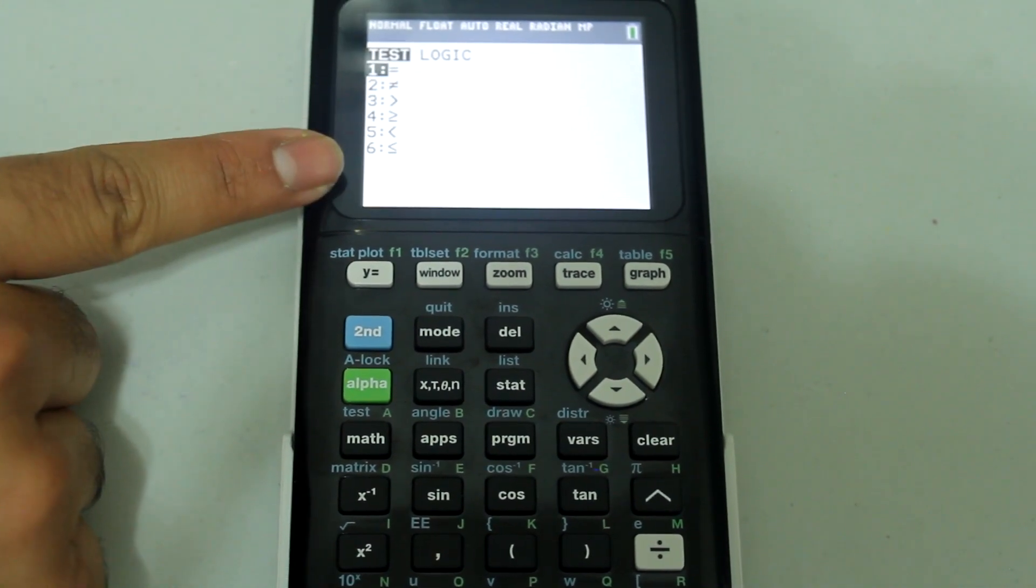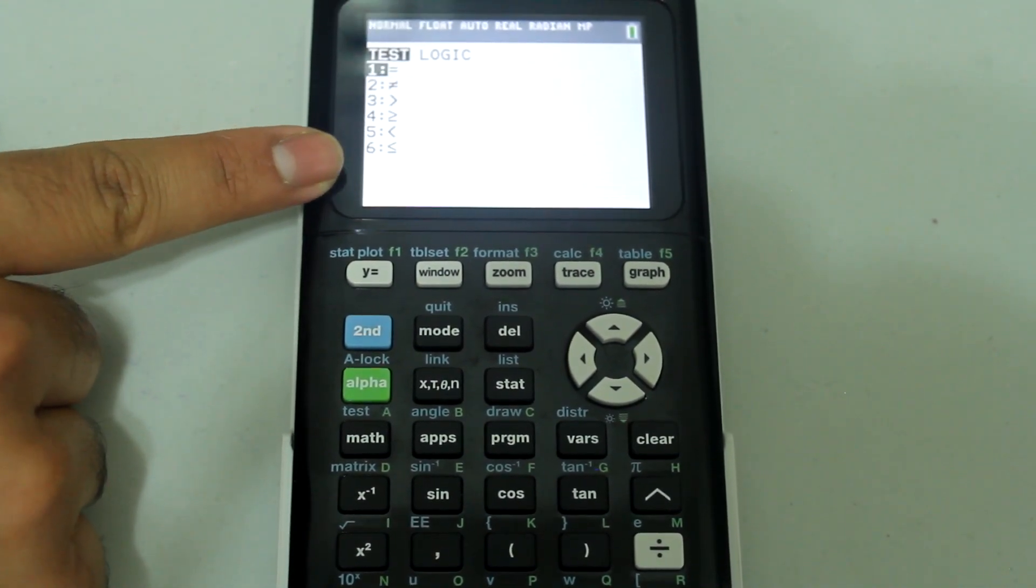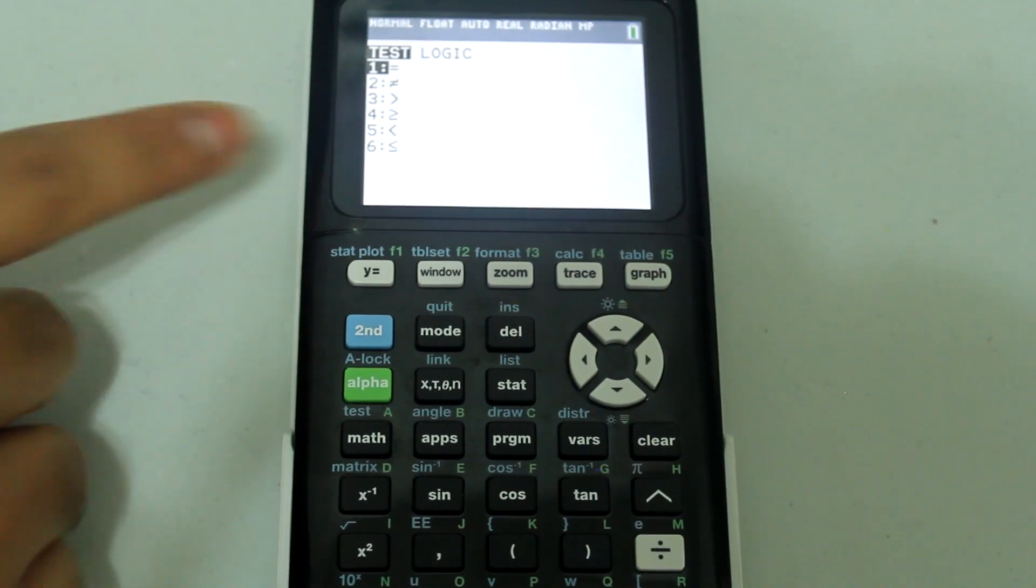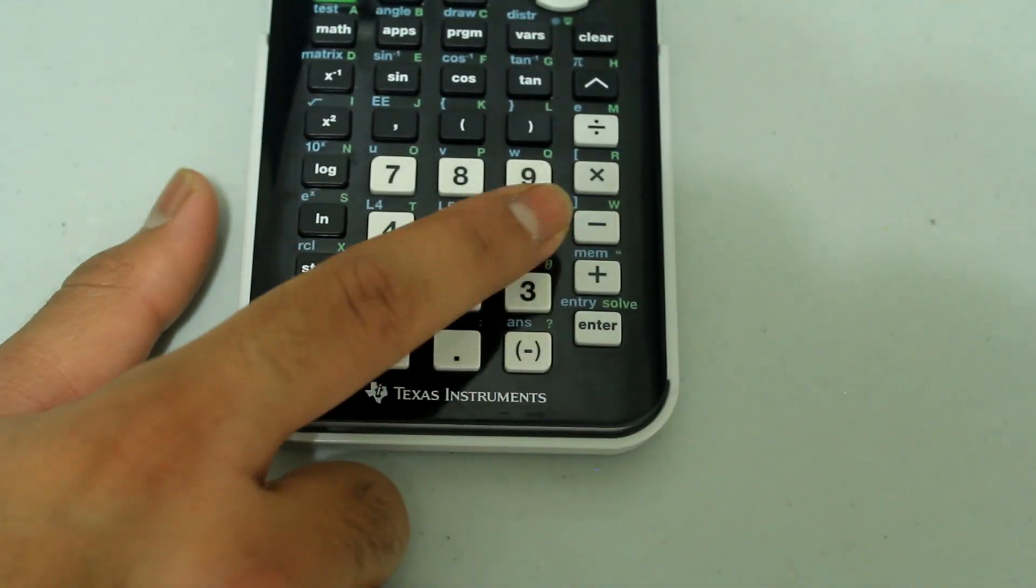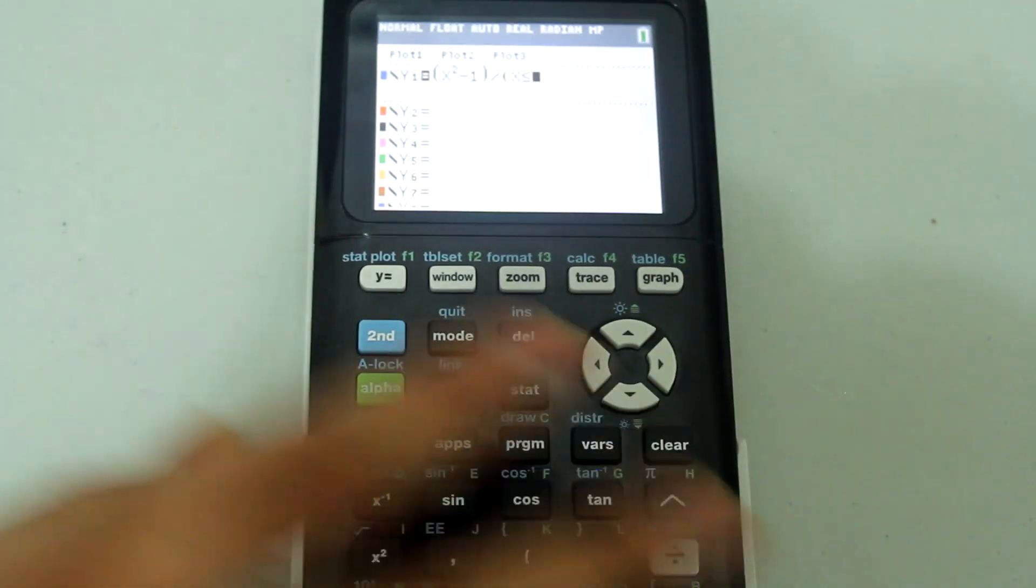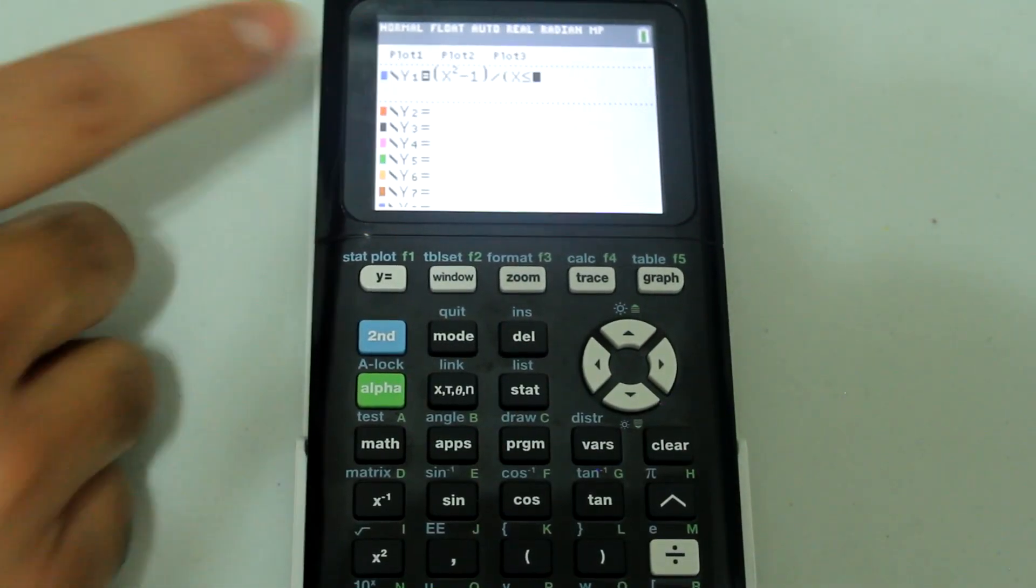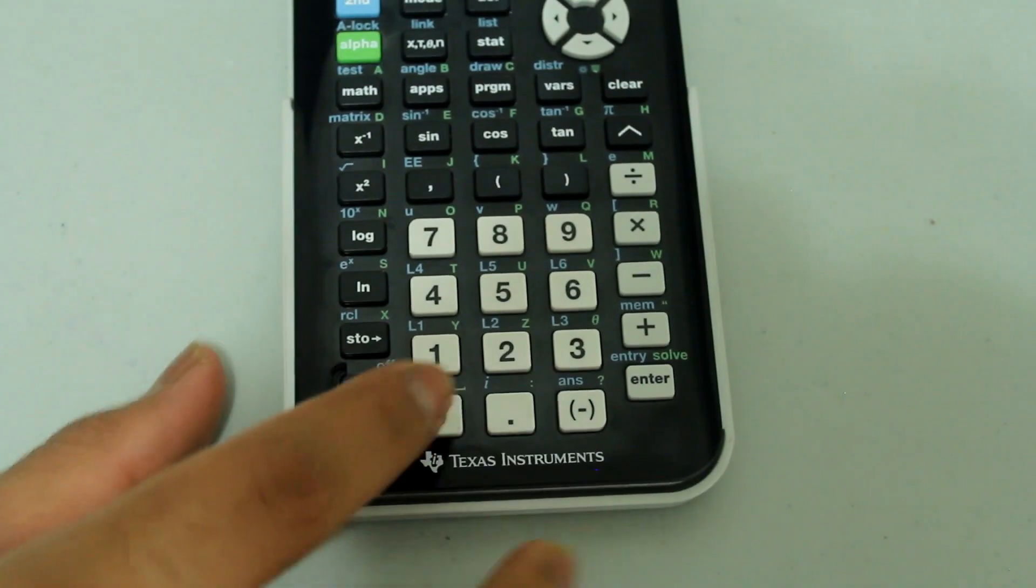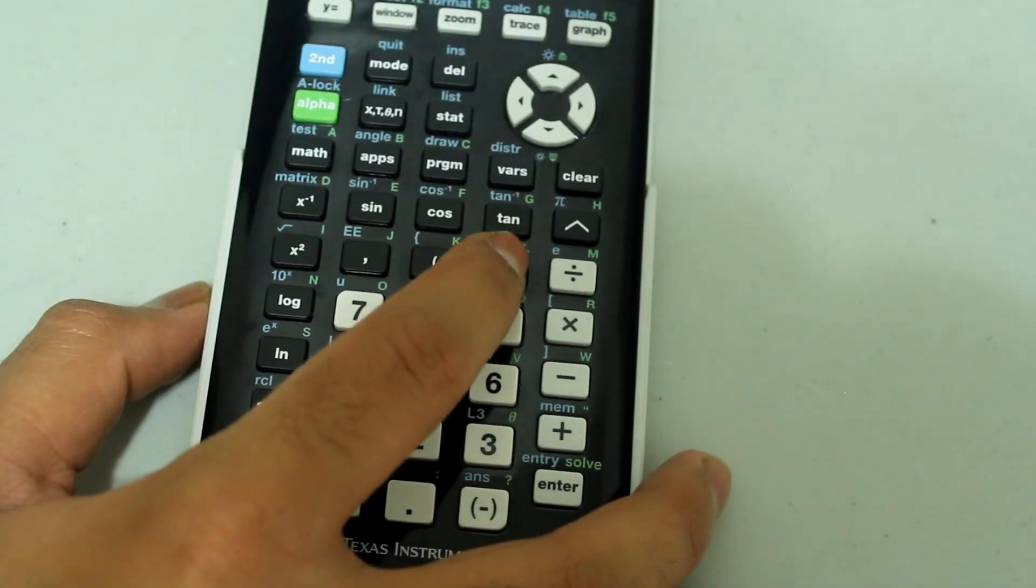And we're interested in choosing the less than or equal to sign which is number 6. So we can just press number 6 on the keypad. And now you see we have x is less than or equal to and we're just going to type in 0 and close that parenthesis.